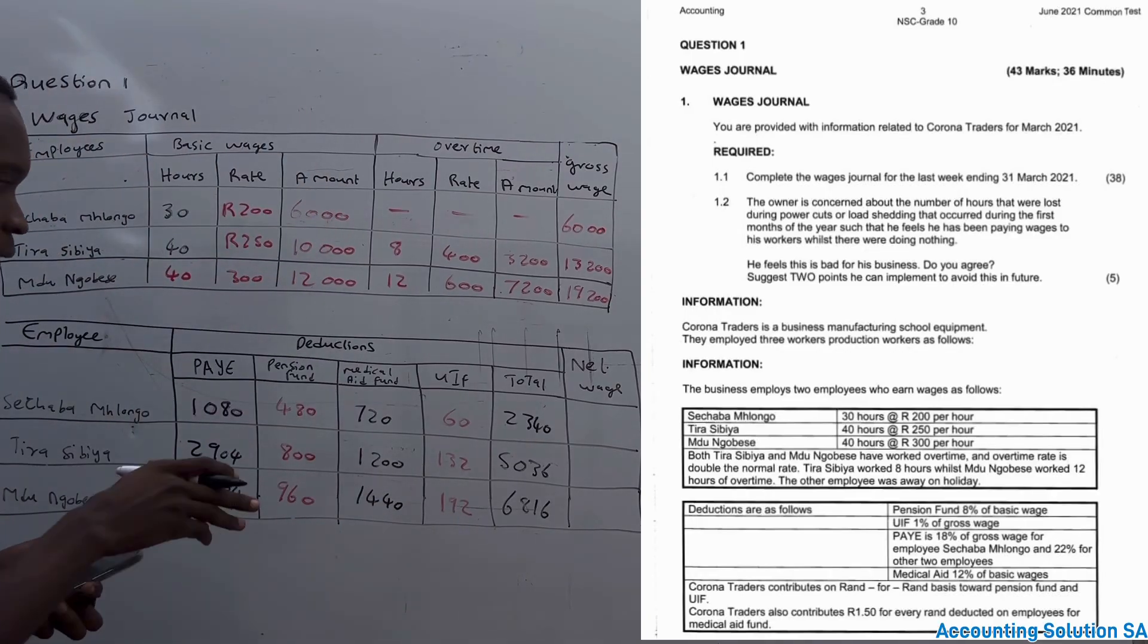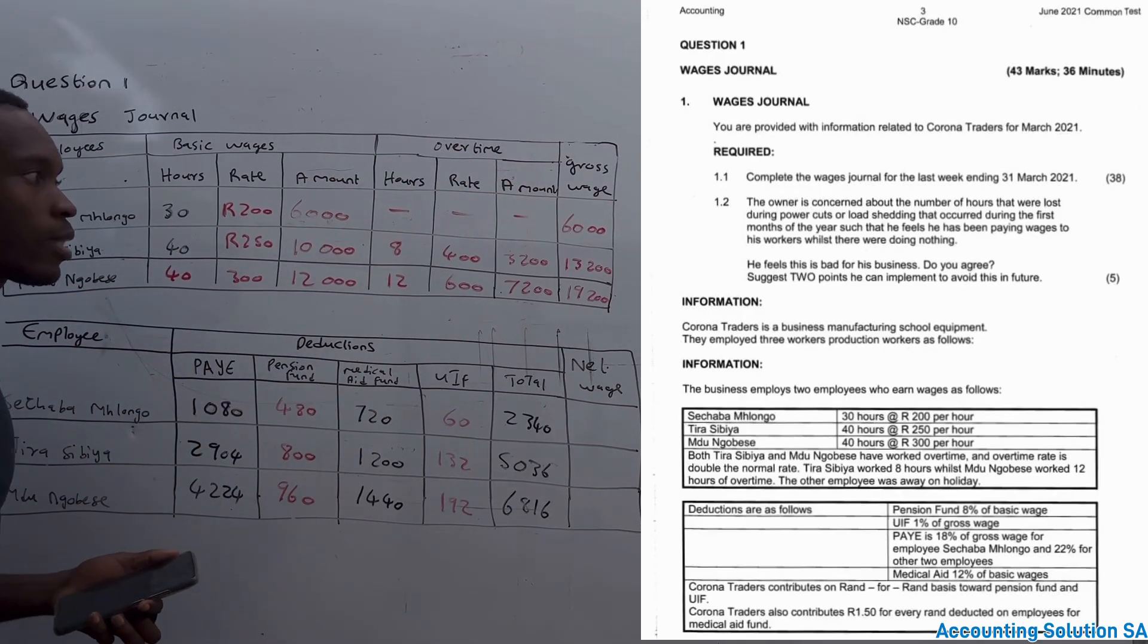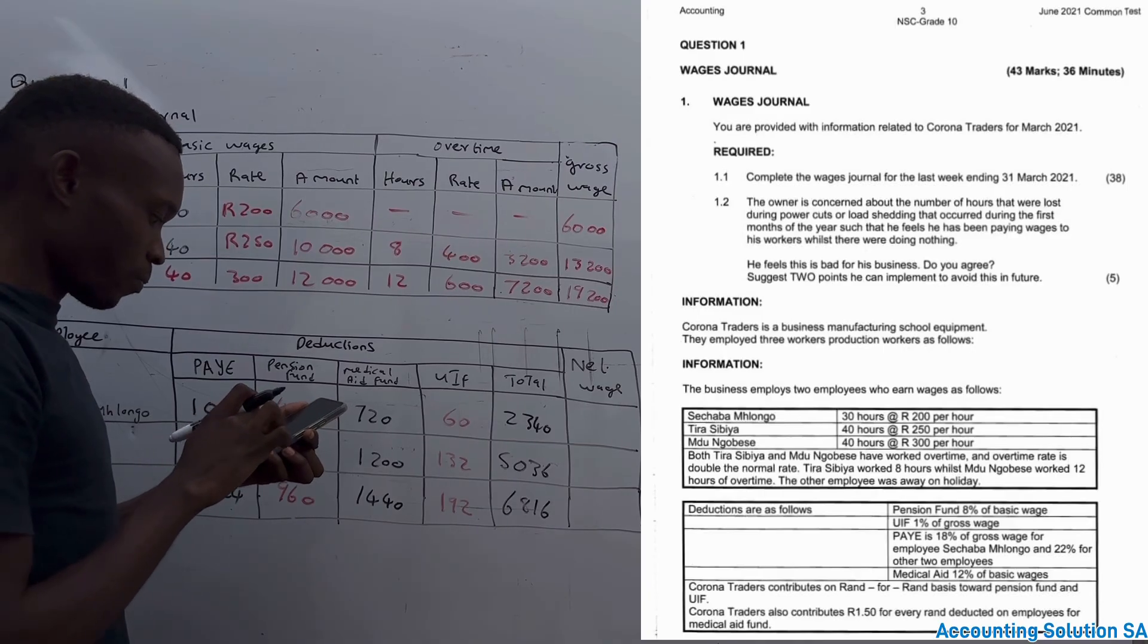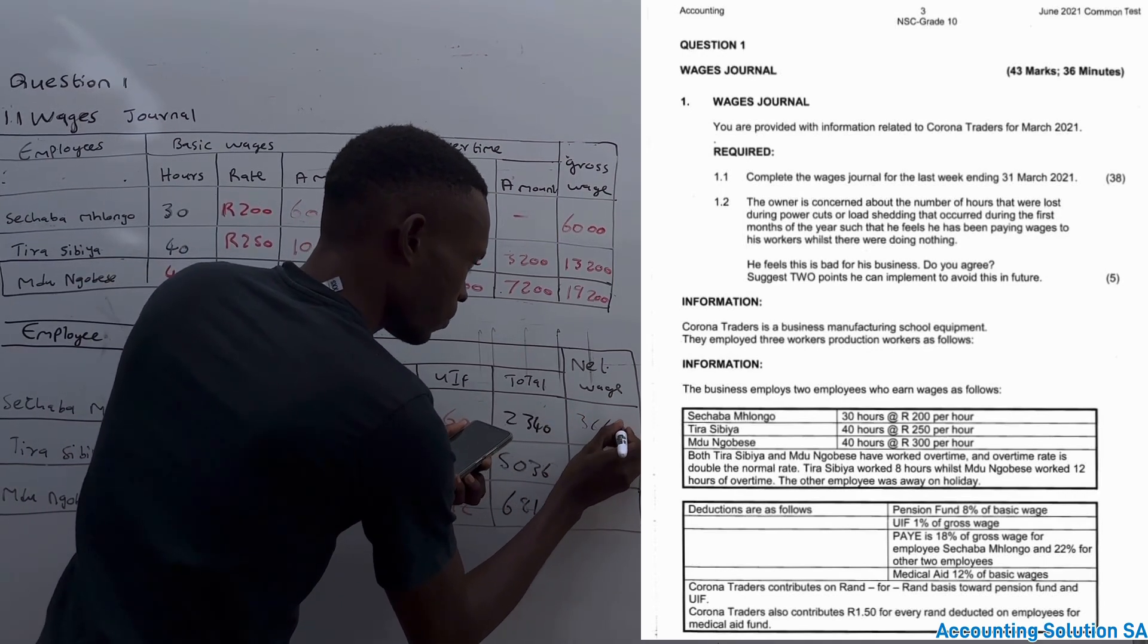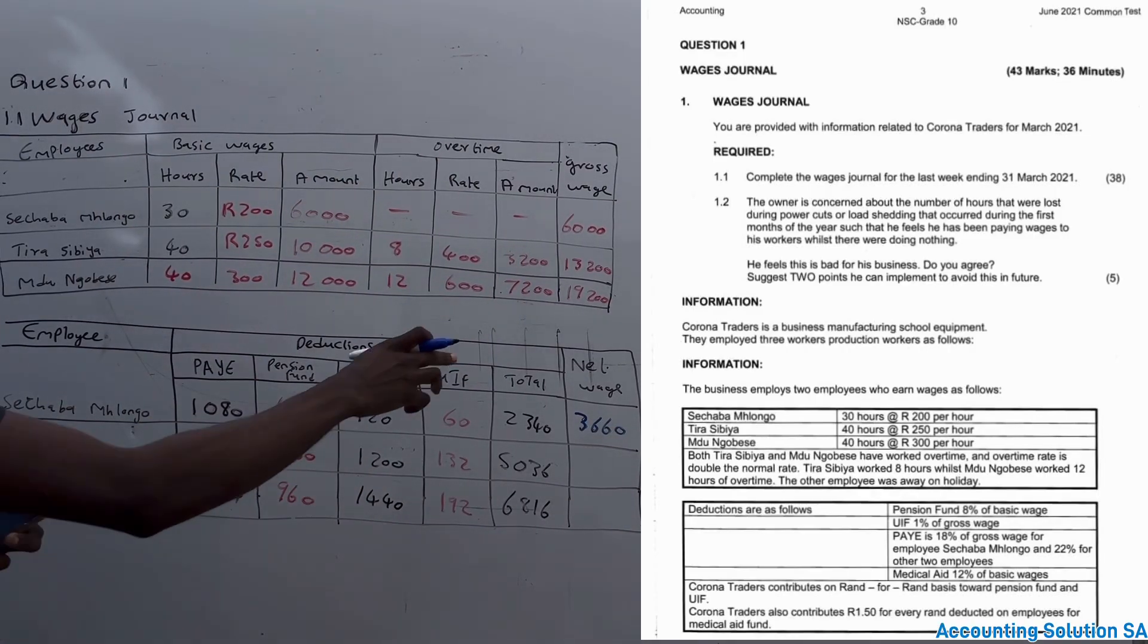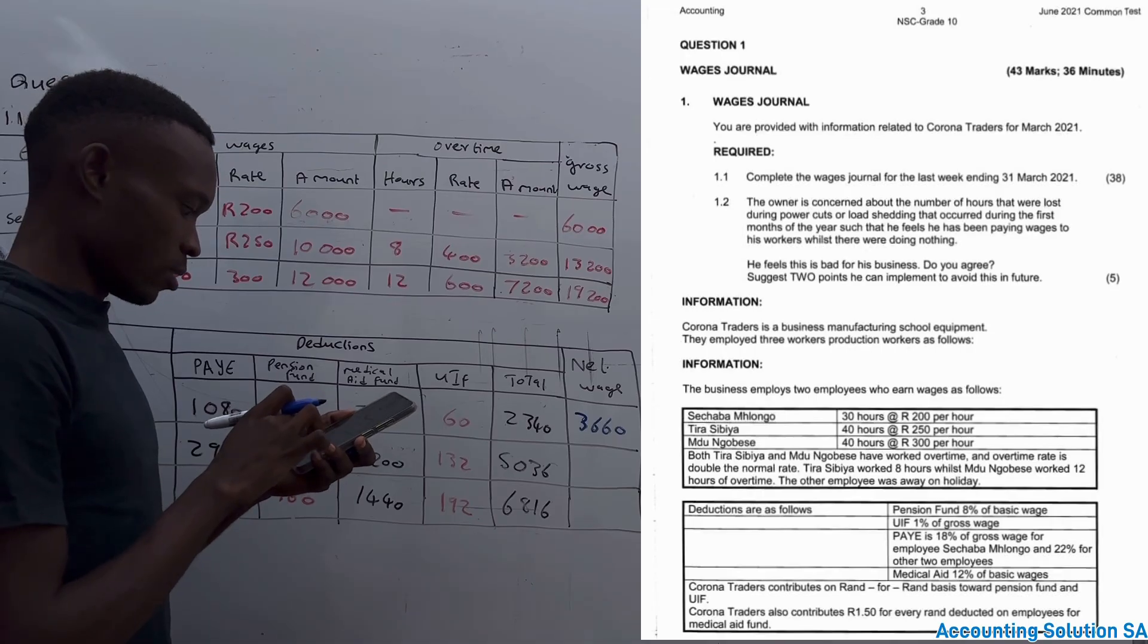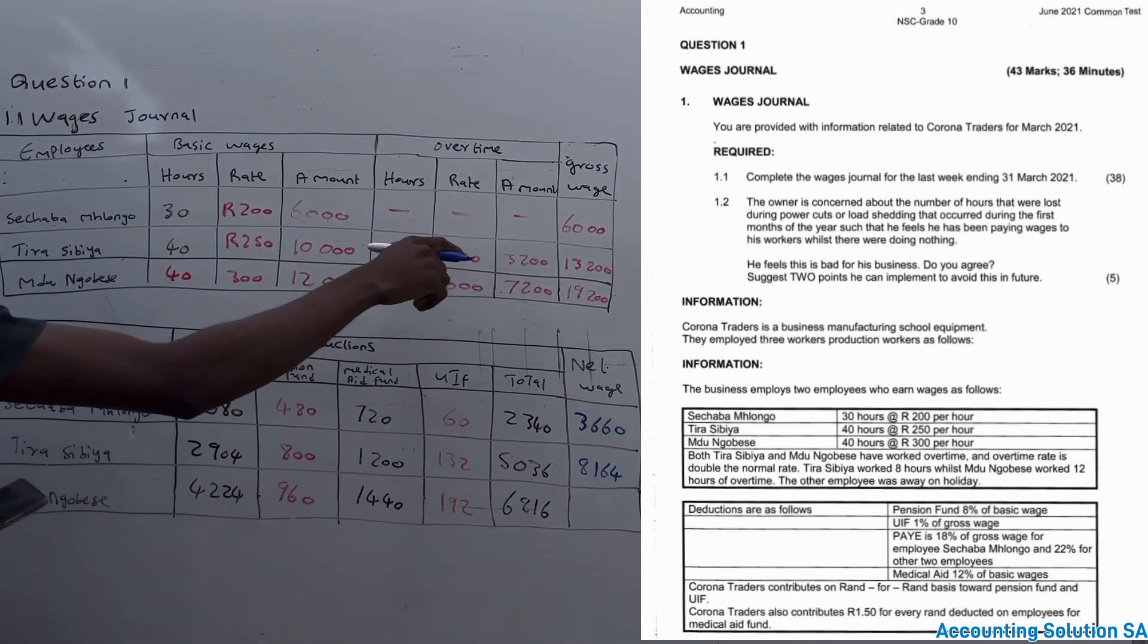Now let's do the last part. The last part is net wage. Net wage, guys, we take gross minus deduction. In other words, we take 6,000 minus total deduction of 2,340, which is going to give us R3,660. And let me take another one. My markers are finished, all of them. Now let's go to the second one. Gross of 13,200 minus 5,036, which is going to give us R8,164. And the last one: 19,200 minus 6,816, which is going to give us R12,384.